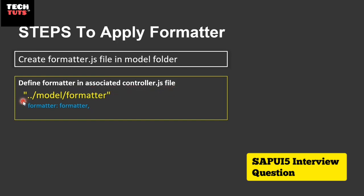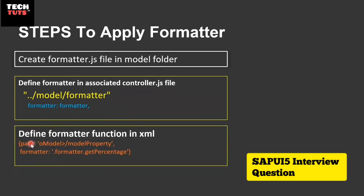In the library defined section we need to define the path for the formatter file. Just above the onInit function we need to mention formatter, column formatter, with a comma separated value. Then we have to define the formatter function in XML.